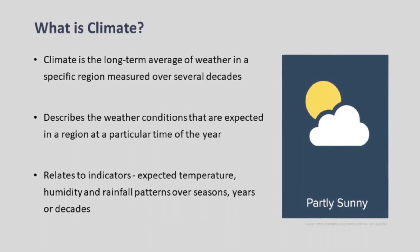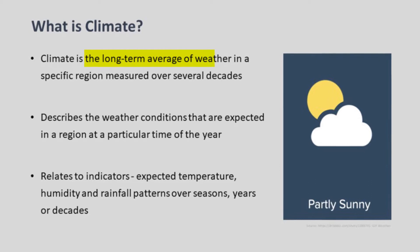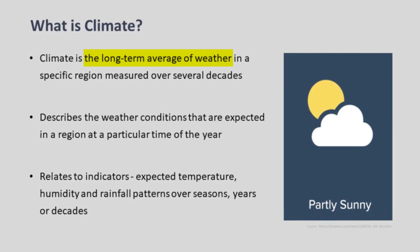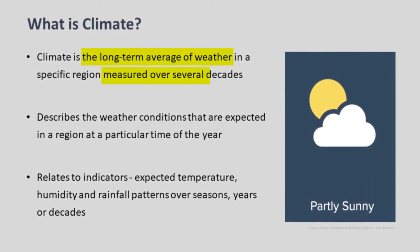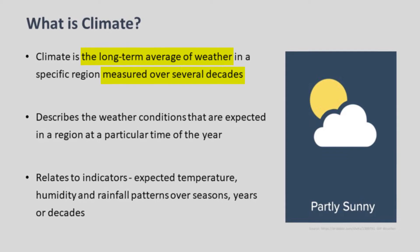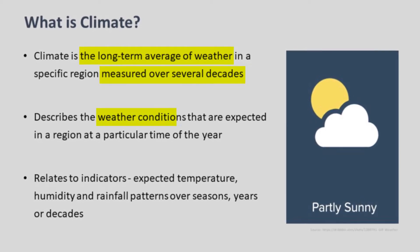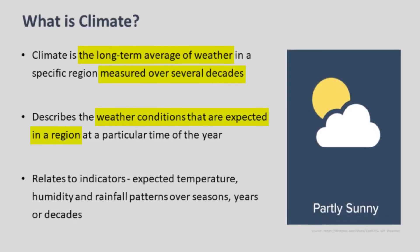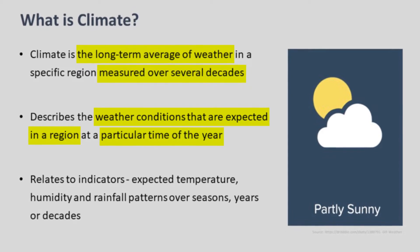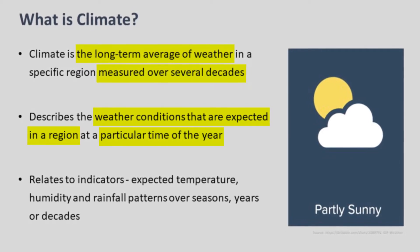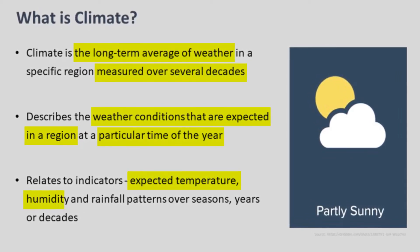Climate can be defined as the long-term average of weather in a specific region measured over several decades. It describes the weather conditions that are expected in a region at a particular time of the year, and it has various indicators such as temperature and precipitation.